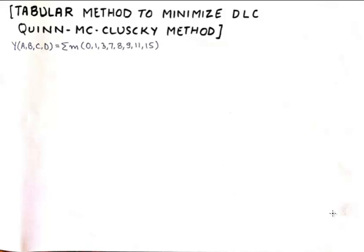Hello friends, welcome to another tutorial in the digital electronics playlist. In today's tutorial, we'll talk about the tabular method to minimize digital logic circuits. This method is also known as the Quine-McCluskey method.